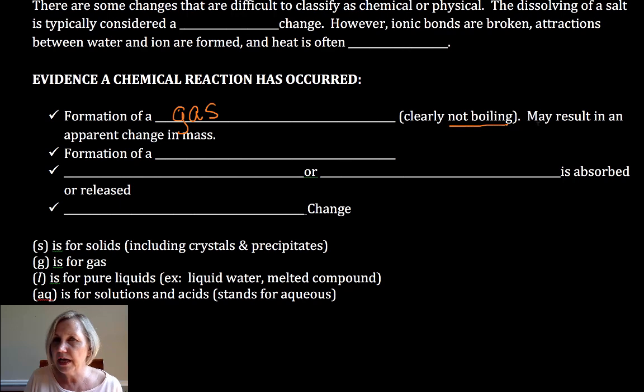Sometimes we may not be able to visualize those bubbles, but we see an apparent change in mass as we go from reactants to products. Now, mass can't be created nor destroyed. So if there's an apparent change in mass, it's because that mass was lost likely as a gas.